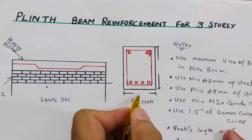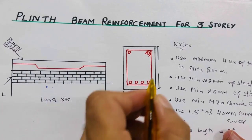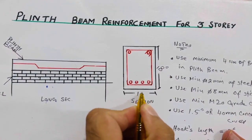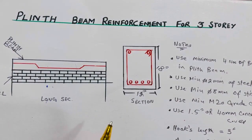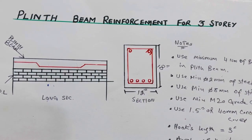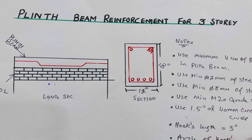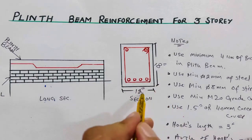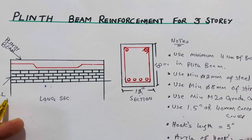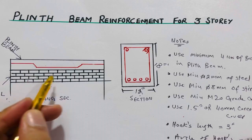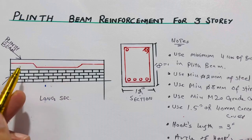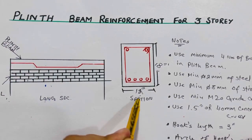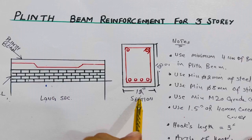For up to three-story building, use the beam size of 18 inches depth and 12 inches width. For two-story you can use 9 inches by 12 inches, but for three stories we have more structural load, so the size should not be less than this. As you can see, this is the plinth level; we have brick masonry, then DPC on top, then the beam with a depth of 18 inches and width not less than 12 inches.